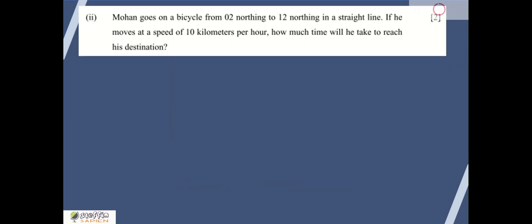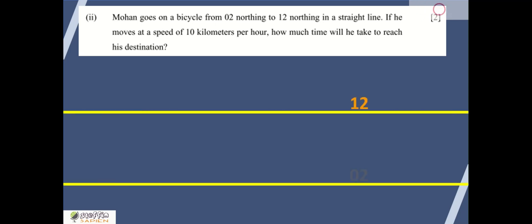Next question: Mohan goes on a bicycle from 02 northing to 12 northing in a straight line. If he moves at a speed of 10 kilometers per hour, how much time will he take to reach his destination? I personally found this question as incorrect. The reason why I am saying it is incorrect is the term straight line.